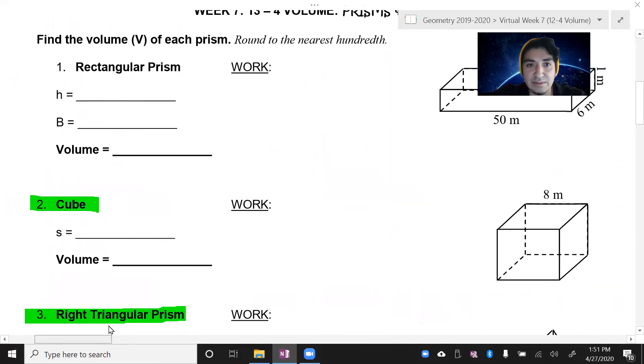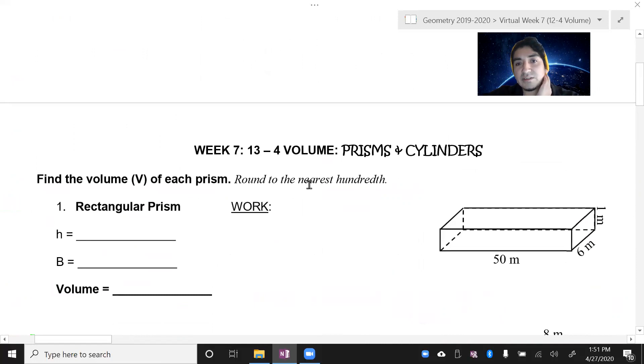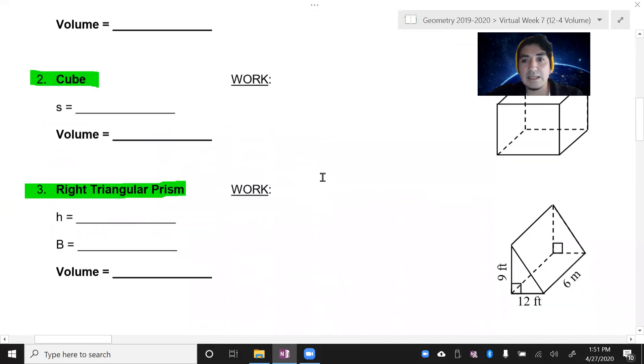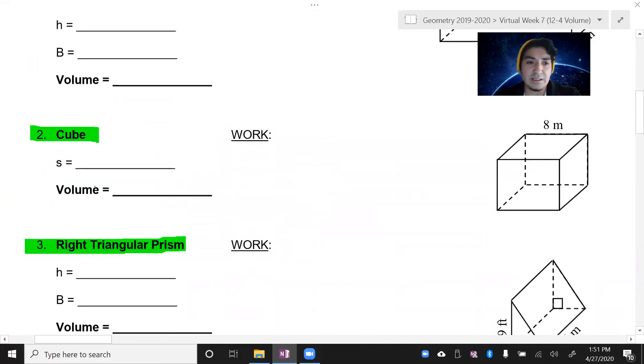Now let's work a few examples out. Find the volume v of each prism and round to the nearest hundredth. For this one, number eight, a cube. What does s stand for? Side. So my side here is worth eight.